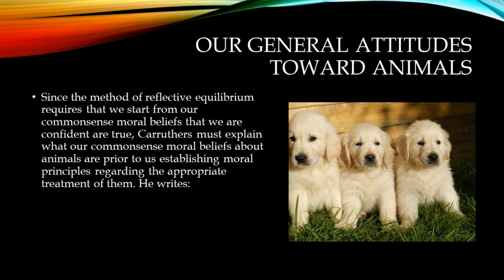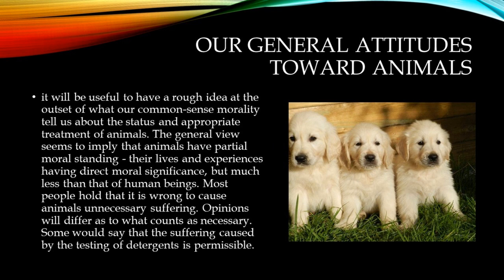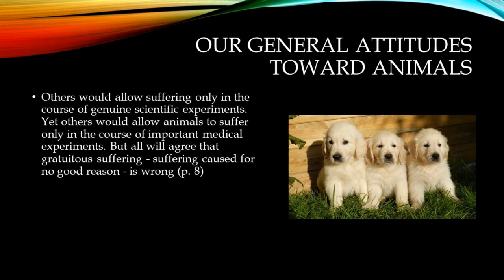Since the method of reflective equilibrium requires that we start from our common-sense moral beliefs, Carruthers must explain what our common-sense moral beliefs about animals are prior to establishing moral principles regarding their treatment. He writes: 'The general view seems to imply that animals have partial moral standing, their lives and experiences having direct moral significance, but much less than that of human beings. Most people hold that it is wrong to cause animals unnecessary suffering. Opinions will differ as to what counts as necessary — but all will agree that gratuitous suffering, suffering caused for no good reason, is wrong.'